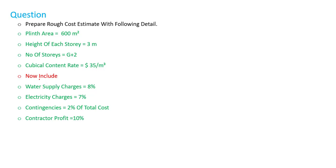You need to include water supply charges as 8%, electricity charges as 7%, contingencies as 2% of total cost — normally we take 3 to 5% but here it is given as 2% — and contractor profit as 10%.